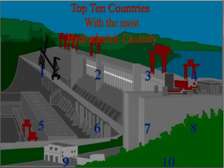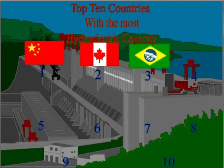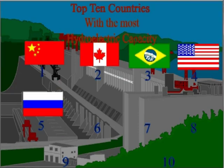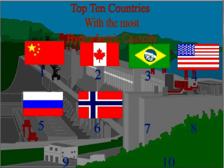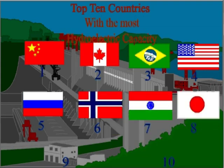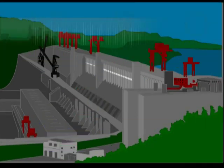Here are the top 10 countries with the most hydroelectric capacity: China, Canada, Brazil, U.S., Russia, Norway, India, Japan, Sweden, and France. Join the trend today and switch to hydroelectric.